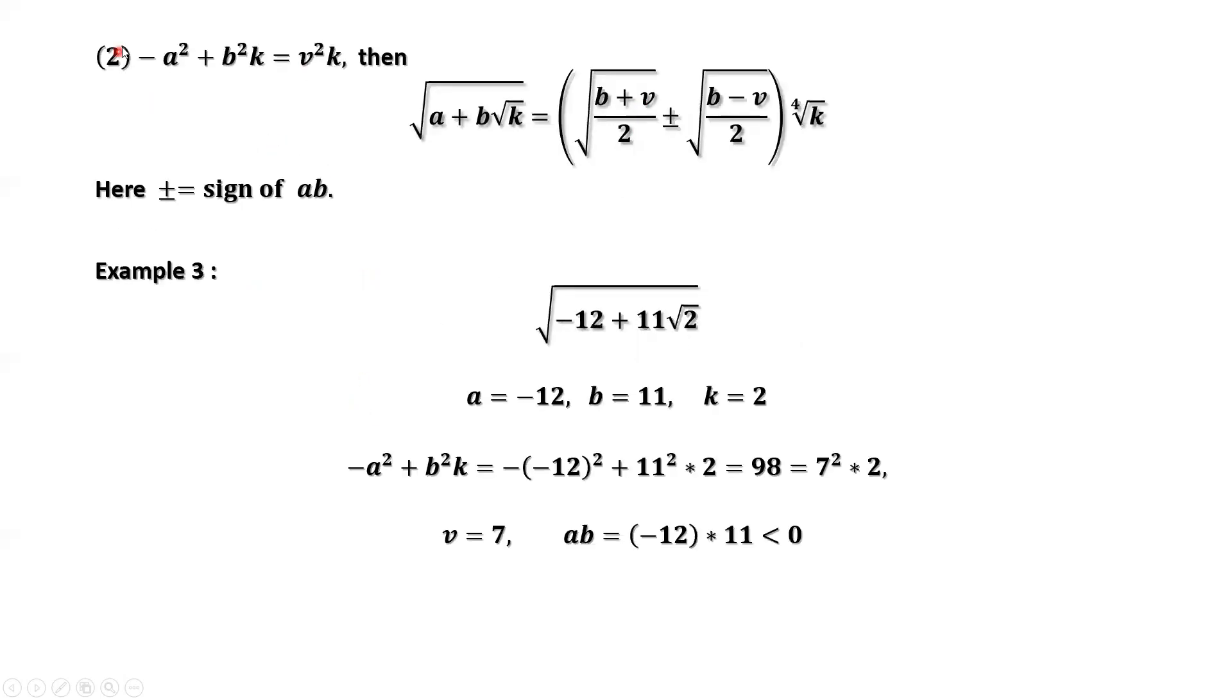We check the second condition. If the second condition is satisfied, we have this result. Here a equals negative 12, b equals 11, k equals 2.